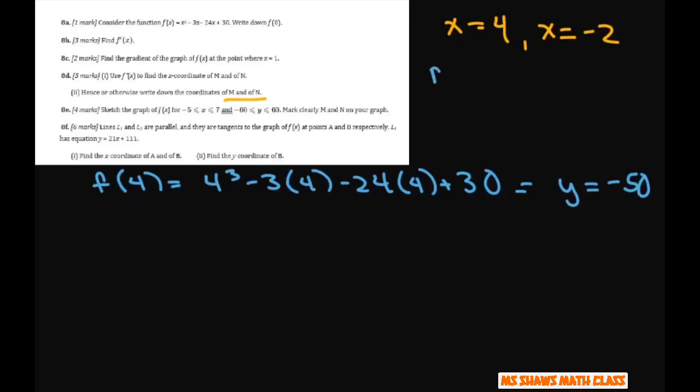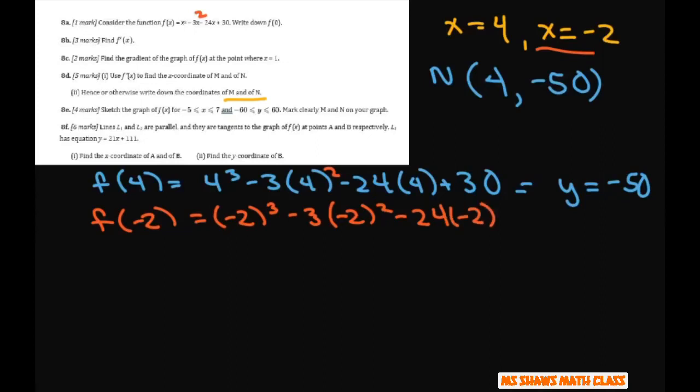All right, that's your n. So your n point with x is 4, y is negative 50. And for x is negative 2, plug that in. Oh, this should be squared. I don't know why they didn't put the square there. And this is all going to equal, this would be y equals 58. So that is your m point. So when x is negative 2, y is 58.